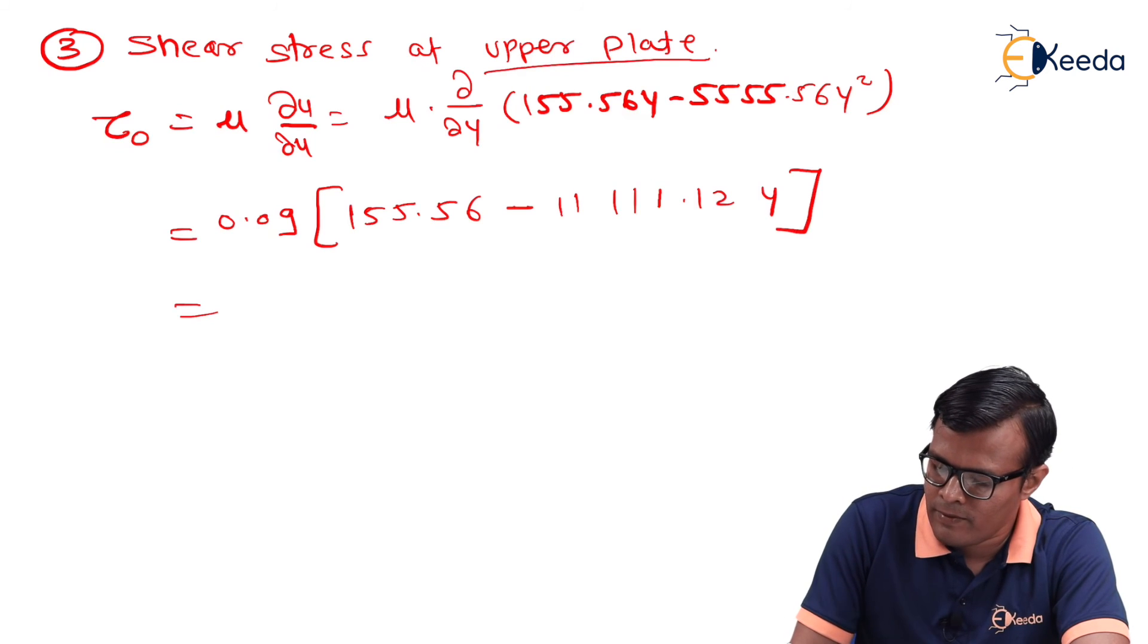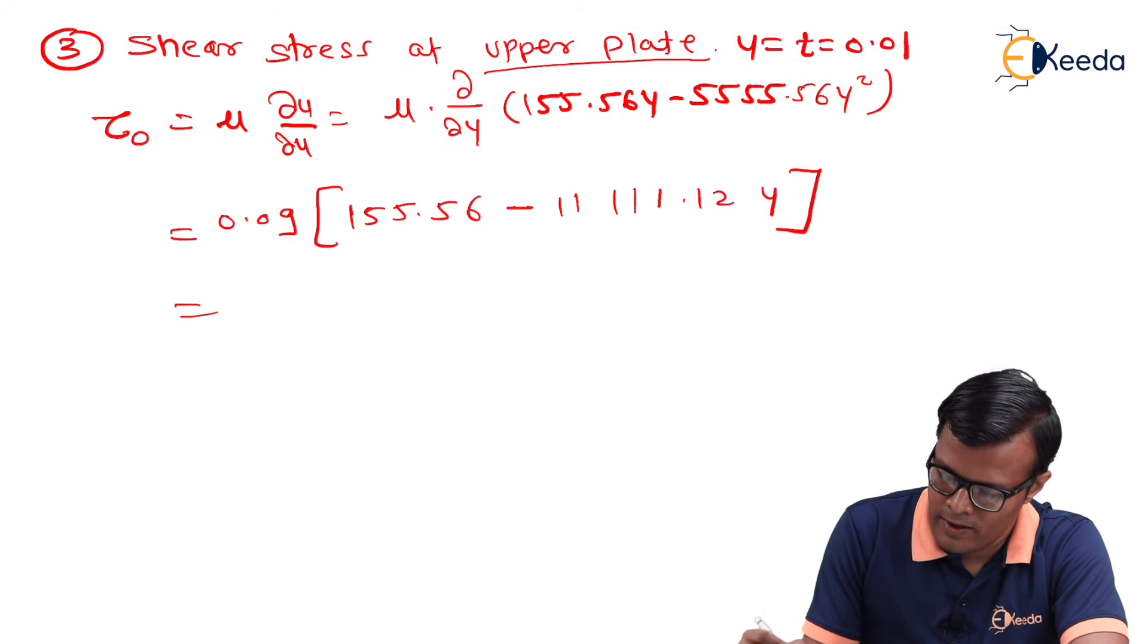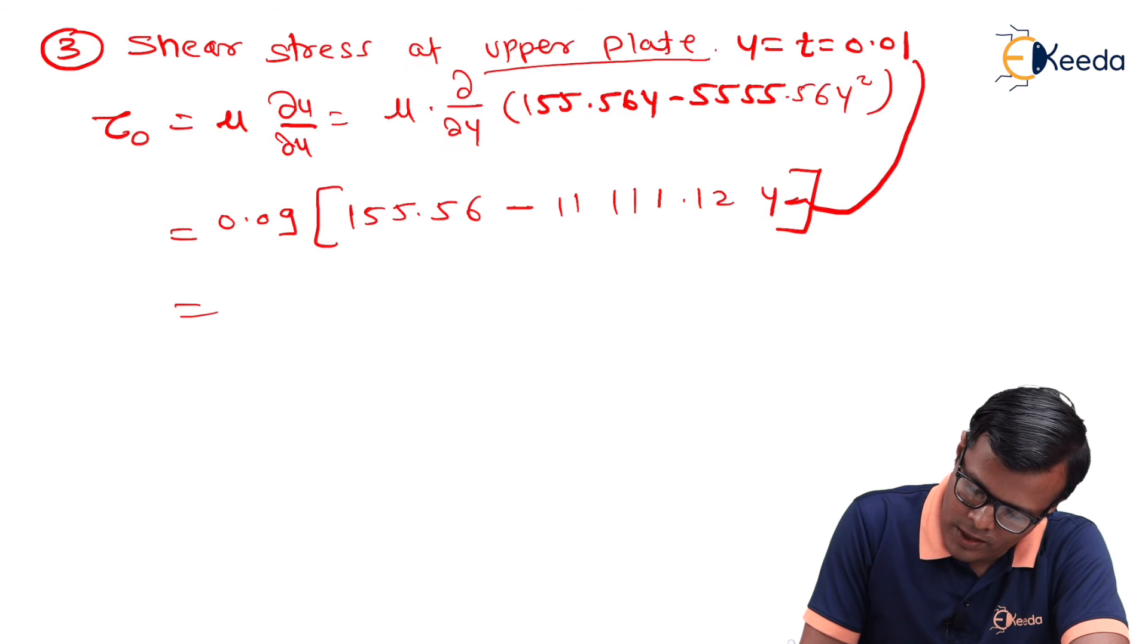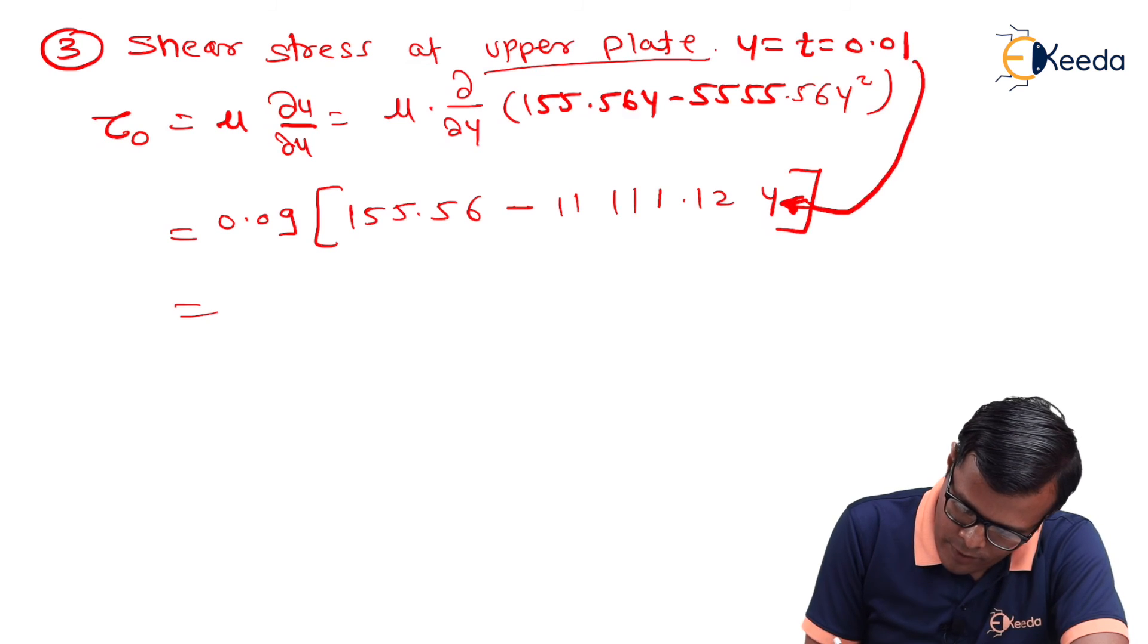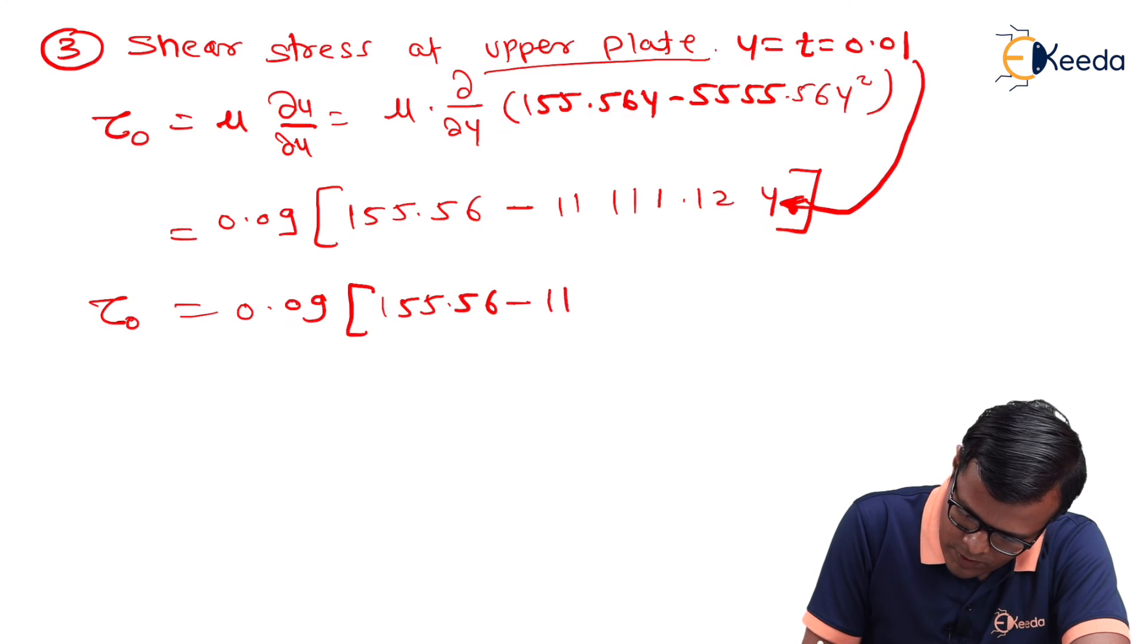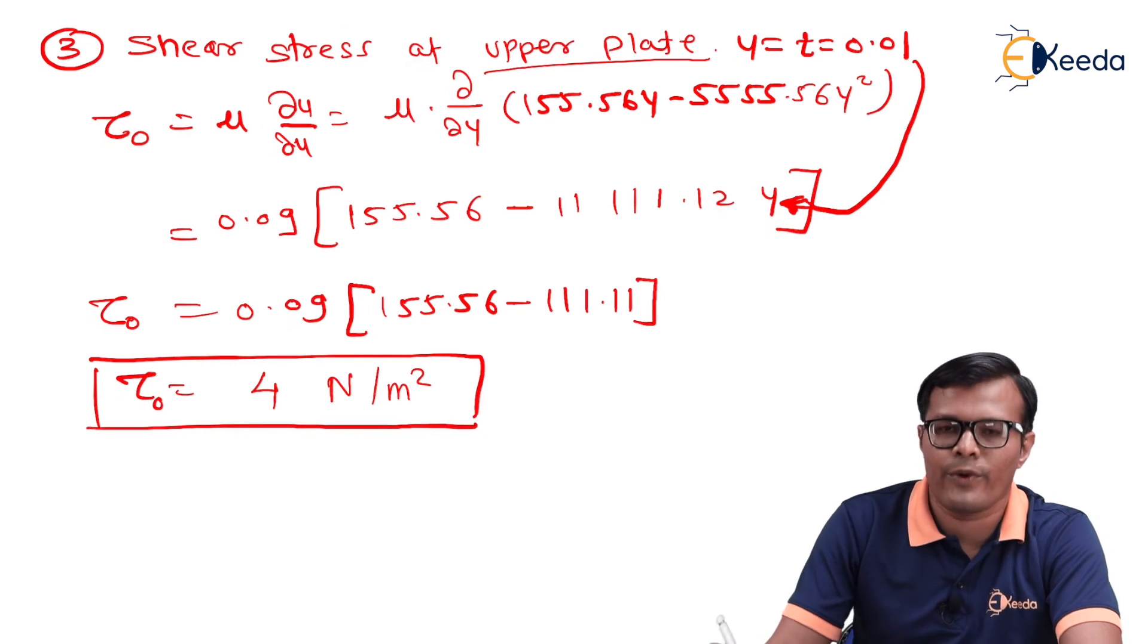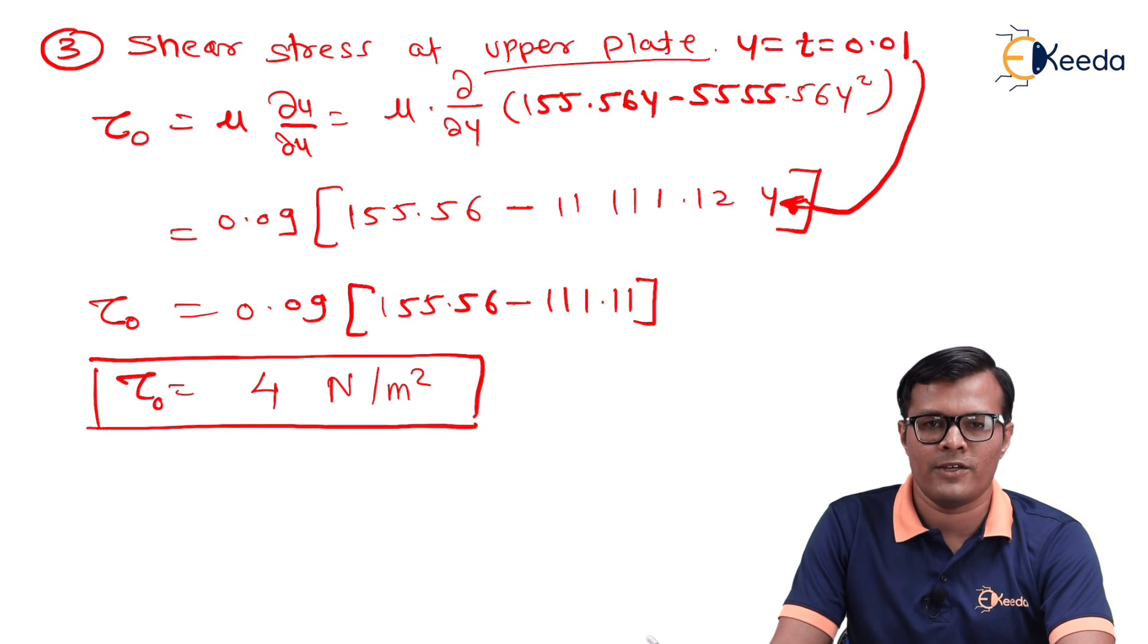After simplification, putting value of y as 0.01 at upper plate, y = t = 0.01, hence we will put this value into the relation. We will have τ₀ = 0.09[155.56 - 111.11], that is equal to finally 4 N/m². So τ₀ value can be easily calculated as 4 N/m². That is all, thank you.